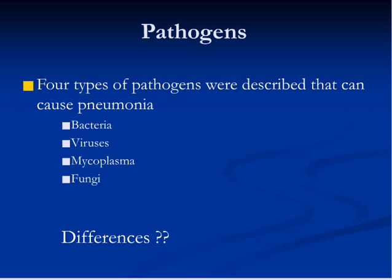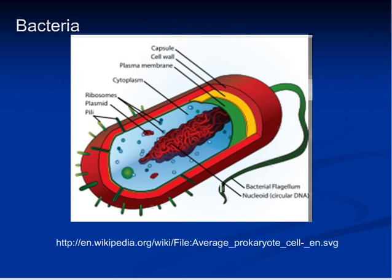Four different types of pathogens were described in earlier videos that can cause pneumonia. These were bacteria, viruses, mycoplasma and fungi. There is another cause which is known as chemical, but we are not concerned about it at the moment.